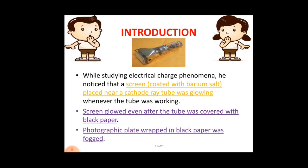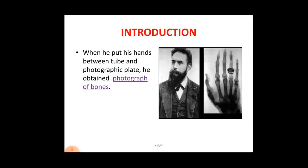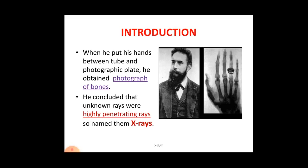For further checking, he took a photographic plate wrapped in black paper and found that the plate started fogging — a type of chemical process. Then he decided to check further: on one side was the cathode ray tube, on the other side was the photographic plate, and he put his hand between the tube and the plate. He could see the bones of his hand. He concluded that there were unknown rays that were highly penetrating — passing through body tissues but stopped by bones, casting a shadow on the photographic plate.